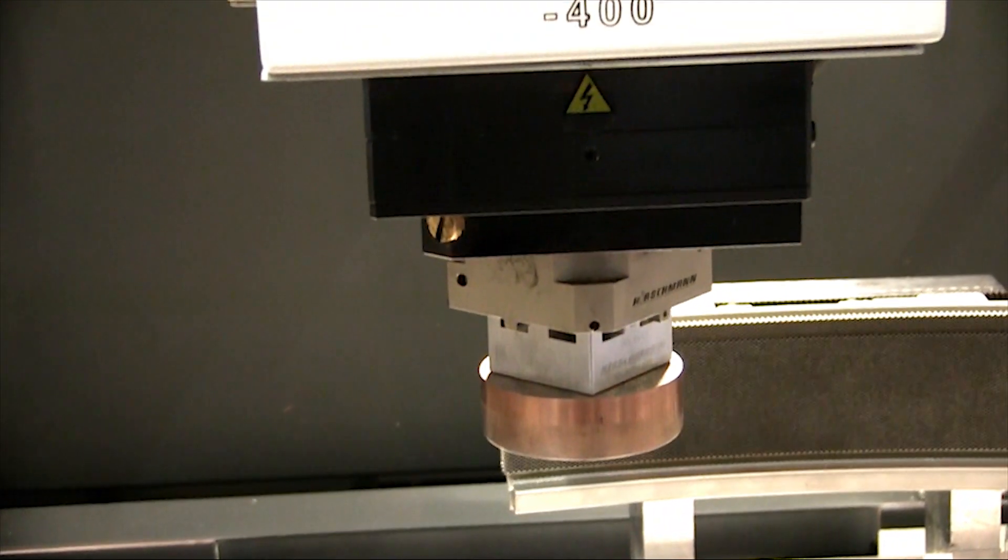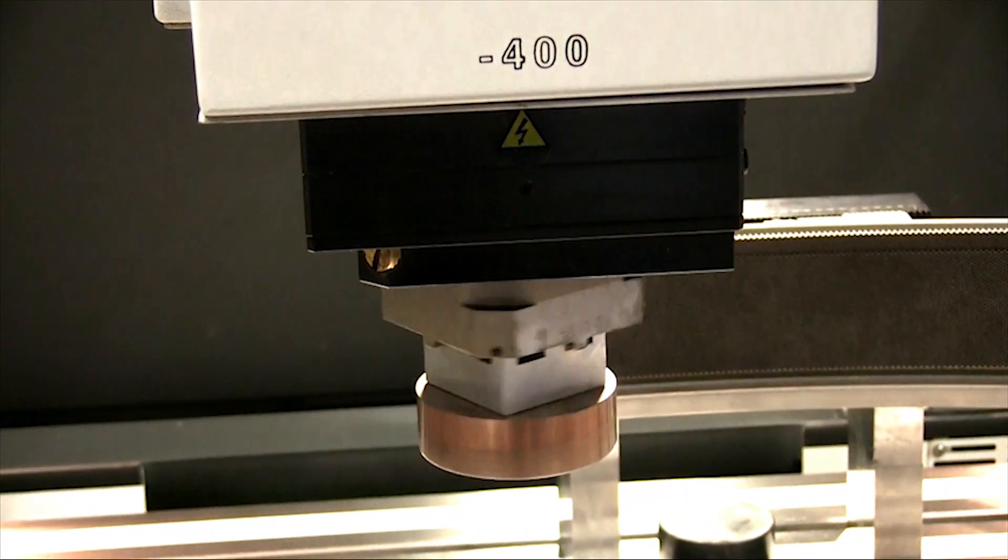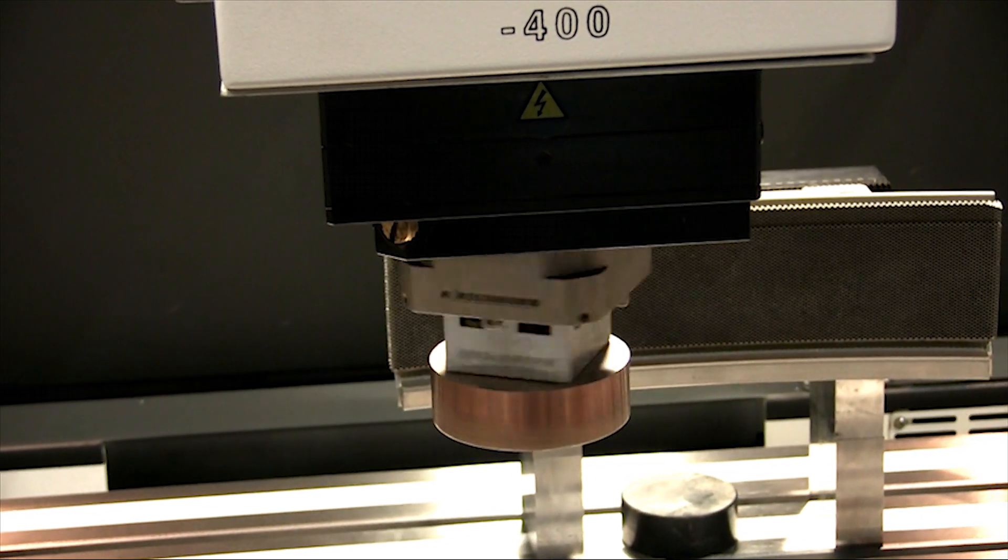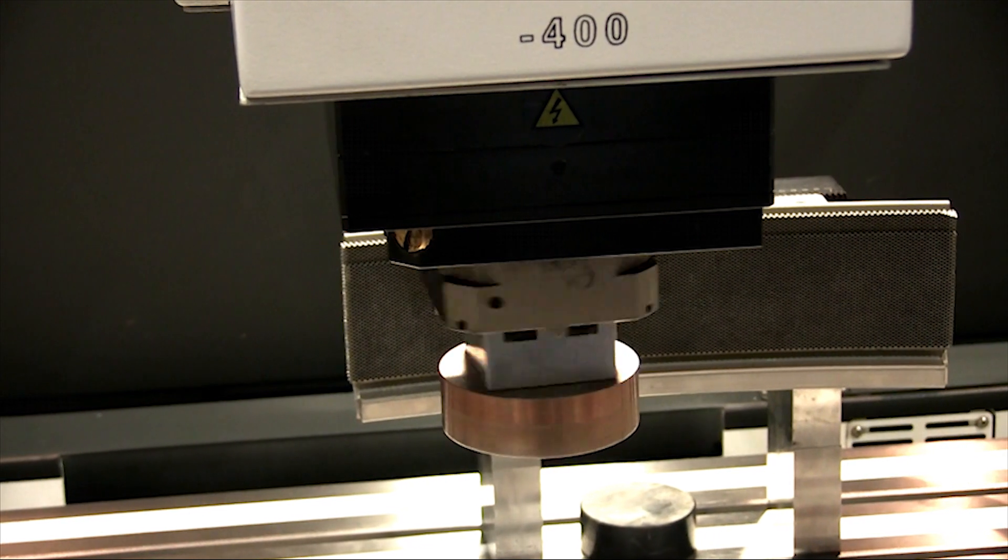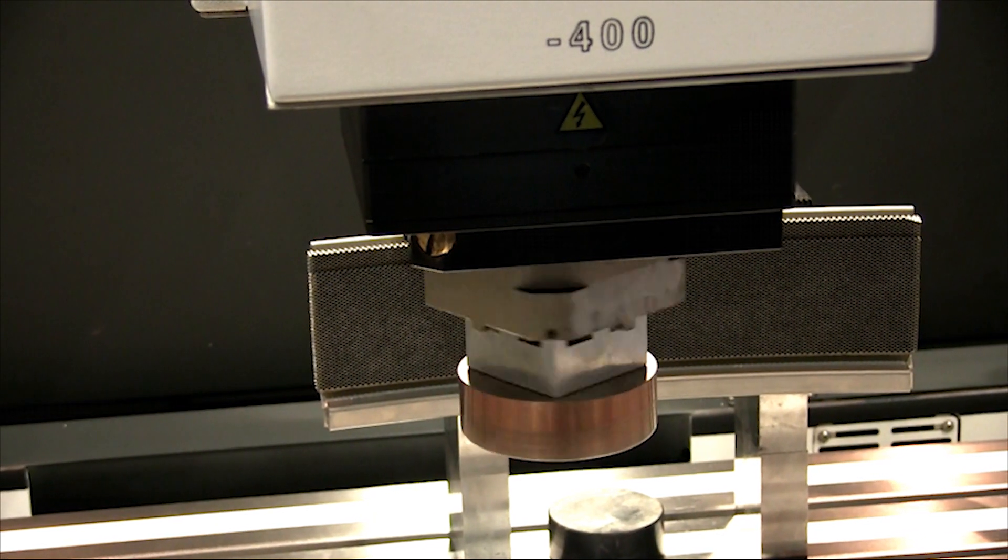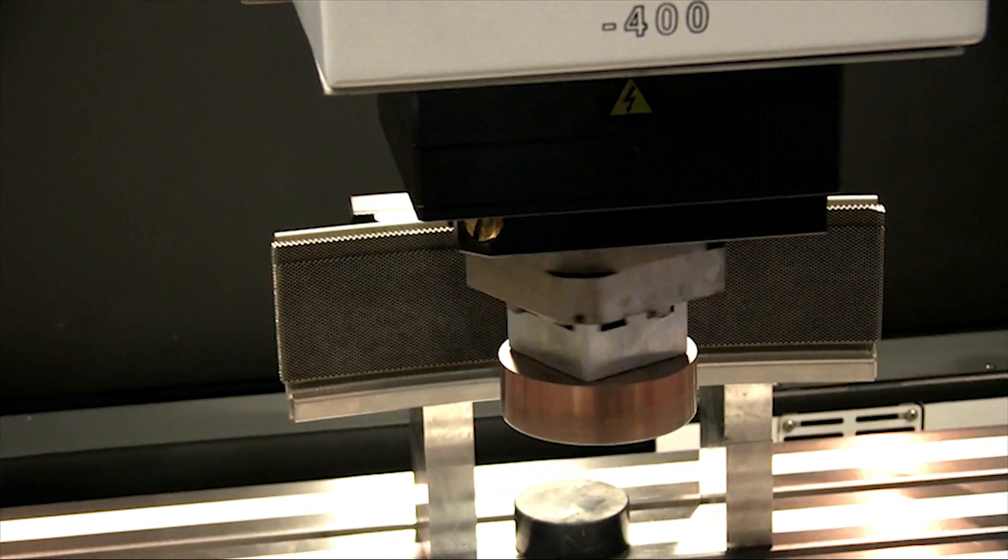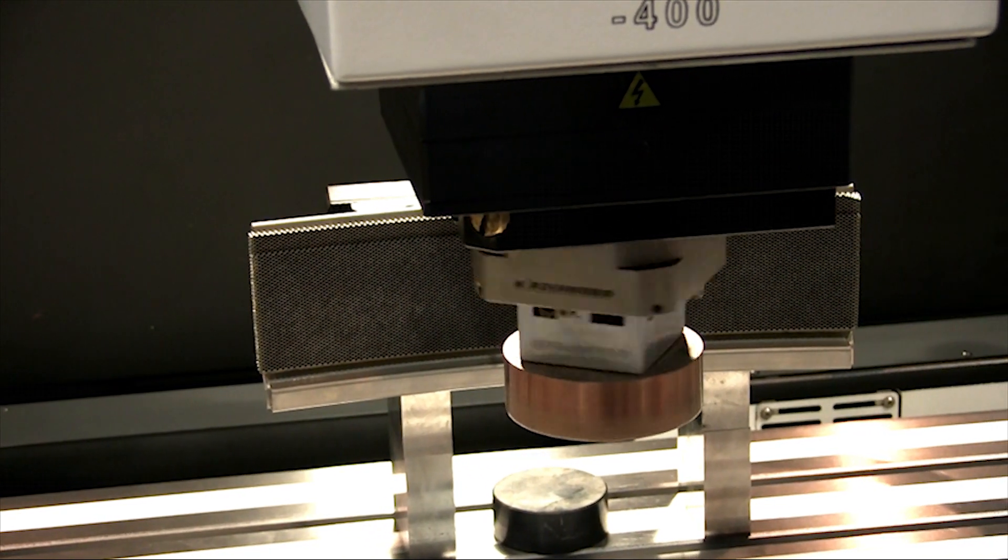This machine has up to eight-axis capability, standard in the controller. The machine comes straight from the factory X, Y, Z, and C, four-axis. If you want to put an A-B table or two A-B tables on here or one on the head, we simply have to insert drive cards into the control and upload your software. That's it.